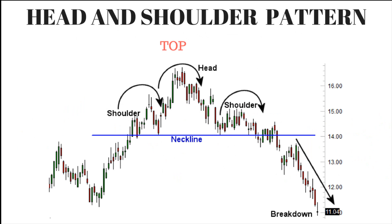Head and shoulders top: the pattern contains three successive peaks, with the middle peak — called the head — being the highest, and the two outside peaks — called shoulders — being low and roughly equal. The reaction lows of each peak can be connected to form support, which is called the neckline.